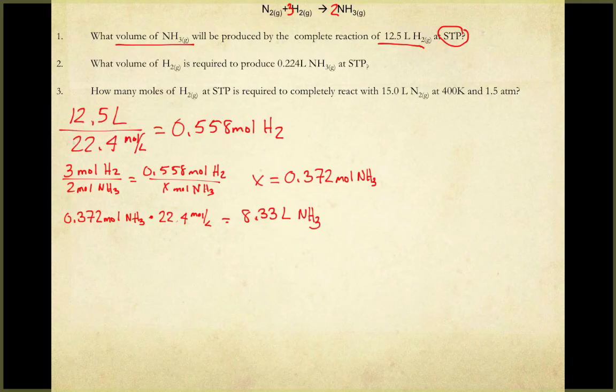Pause the video here and try the next two problems on your own. Note that in problem 3, you start at STP so you can use molar volume to convert N2 to moles, but your conversion of H2 to moles will have to use PV = nRT since you're at non-standard conditions. When you come back, I'll reveal the answers.